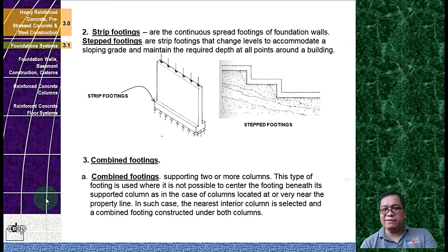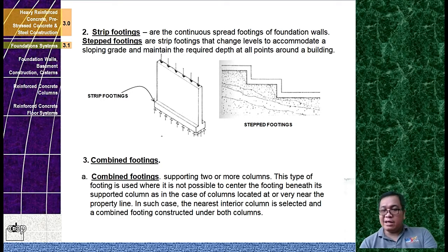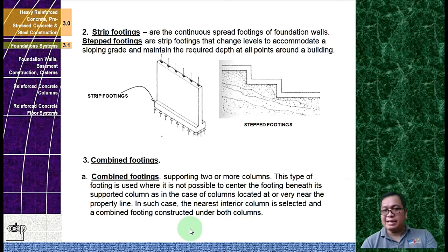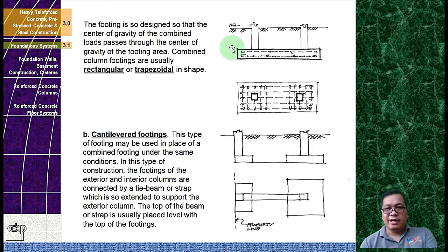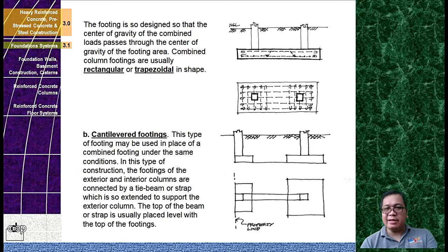You also have combined footings, which support two or more columns. This type of footing is used where it is not possible to center the footing beneath its supported column, as in the case of columns located at or very near the property line. The nearest interior column is selected and the combined footing is constructed under both columns. Combined footings are used when the distance between columns is too small — for example, only 0.2 to 0.3 meters. The footing is designed so that the center of gravity of the combined load passes through the center of gravity of the footing area. Combined column footings are usually rectangular or trapezoidal in shape.